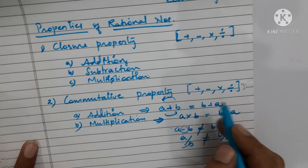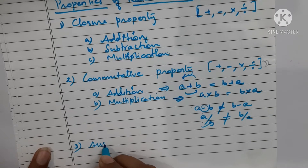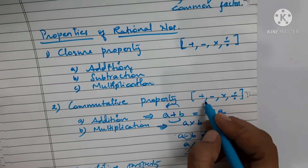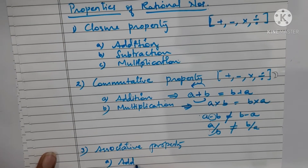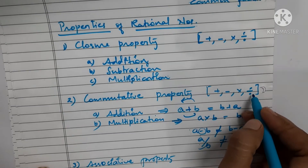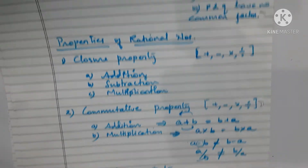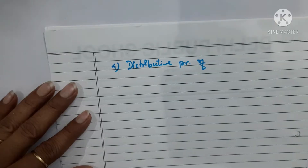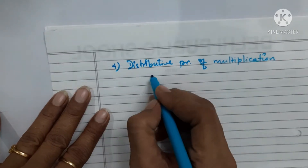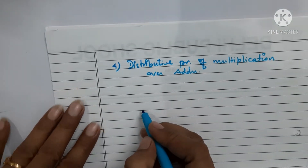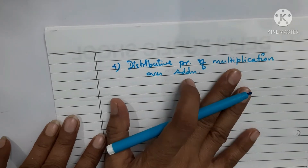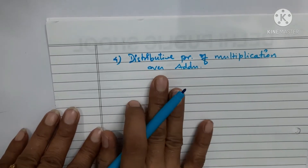The third property is the associative property. In associative property, only two operations are applicable: addition and multiplication. For subtraction and division, it is not possible. The fourth property is the distributive property — multiplication over addition — and this is also applicable in the case of rational numbers. So these are the four properties we have discussed.